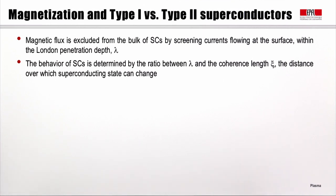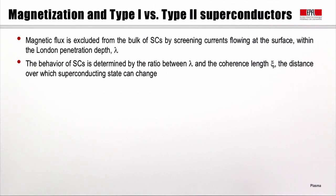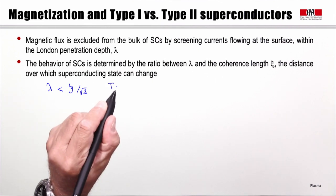We can now look at the magnetization and the distinction between type 1 and type 2 superconductors. The magnetic flux is excluded from the bulk of the superconducting material by screening currents that flow at the surface, within a certain London penetration depth λ. The behavior is determined by the ratio between λ and the coherence length ξ — the distance over which the superconducting state can change. In type 1, the penetration depth is smaller than ξ over √2.